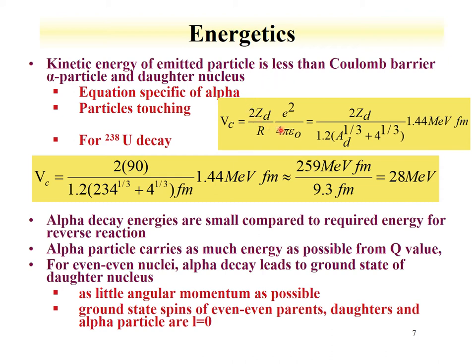Here's our equation for the Coulomb barrier. Since we're solving for alpha, the Z of the alpha particle is 2, with a factor of 1.44 MeV·fm. For uranium-238, the alpha particle Z is 2, and the daughter would be thorium, so we use Z = 90. Plugging in values — 1.2 times (A_daughter^(1/3) + A_helium^(1/3)) times 1.44 MeV/fm — we get a Coulomb barrier of 28 MeV.